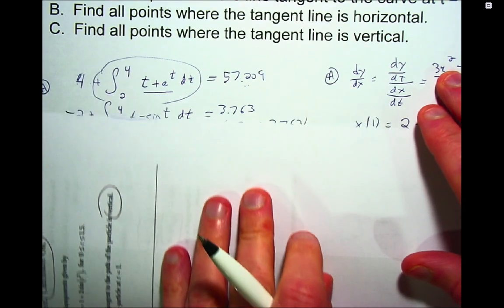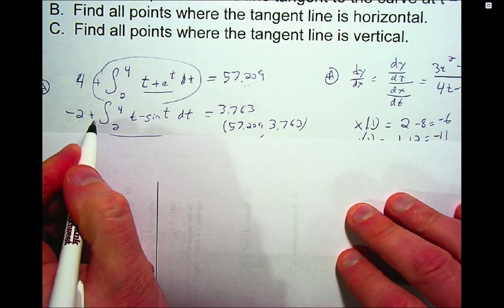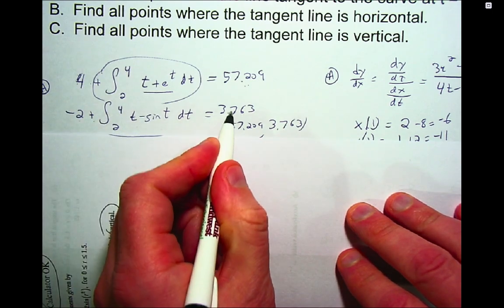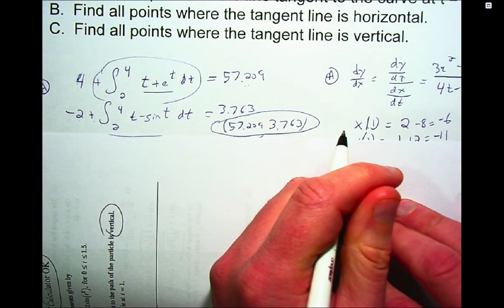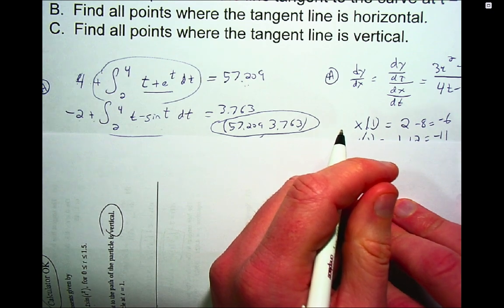And then we do the same thing for the y coordinate. So y started at negative 2, and then we integrate the y velocity from 2 to 4, and we get this coordinate, and so then the answer is an xy coordinate. So 57.209, 3.763.